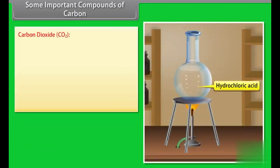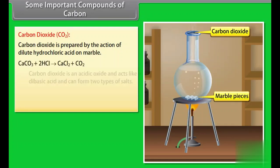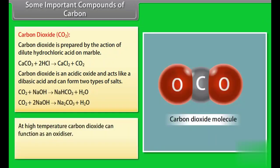Carbon dioxide. Carbon dioxide is prepared by the action of dilute hydrochloric acid on marble. Carbon dioxide is an acidic oxide and acts like a dibasic acid and can form two types of salts. At high temperature, carbon dioxide can function as an oxidizer.